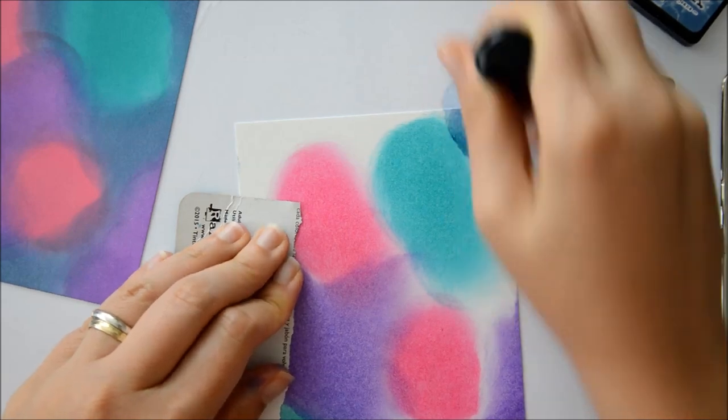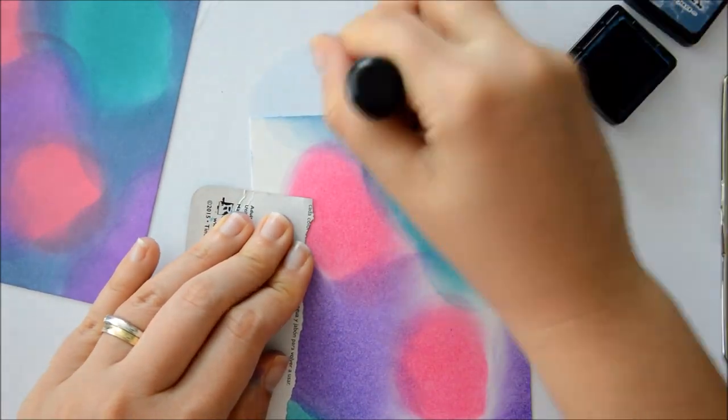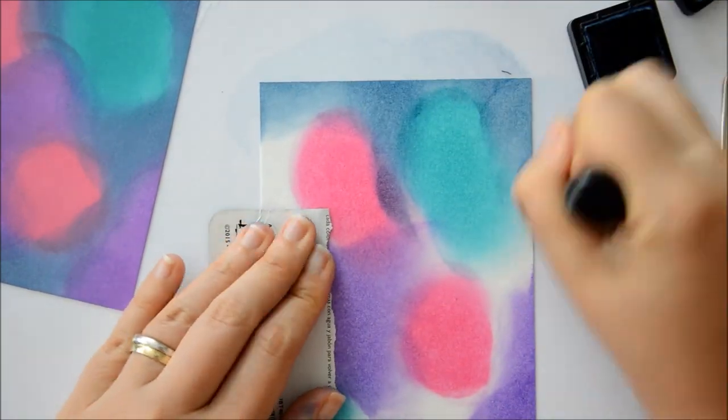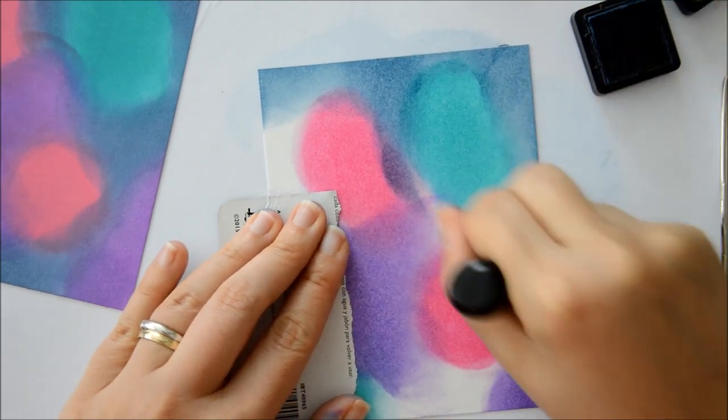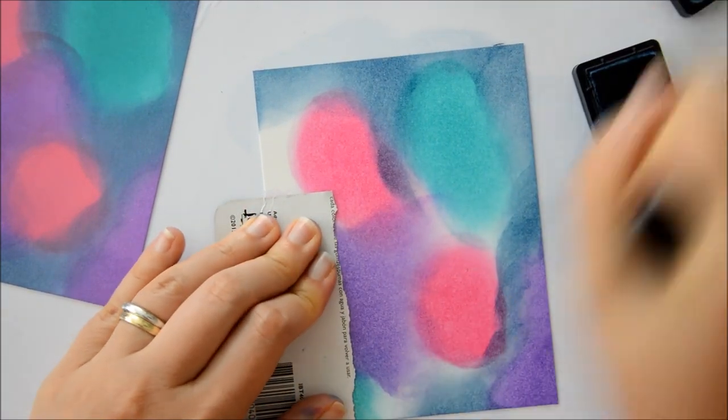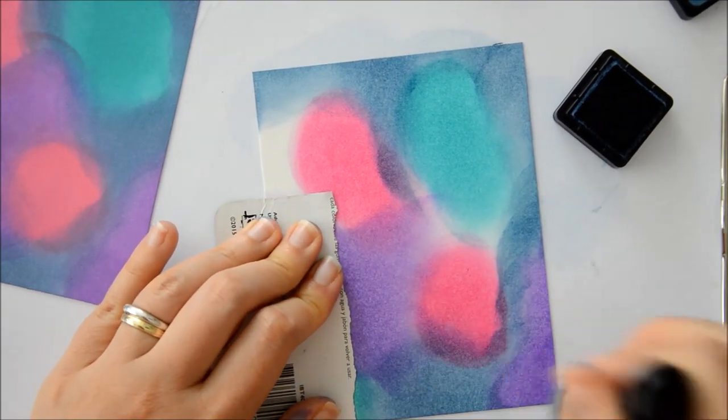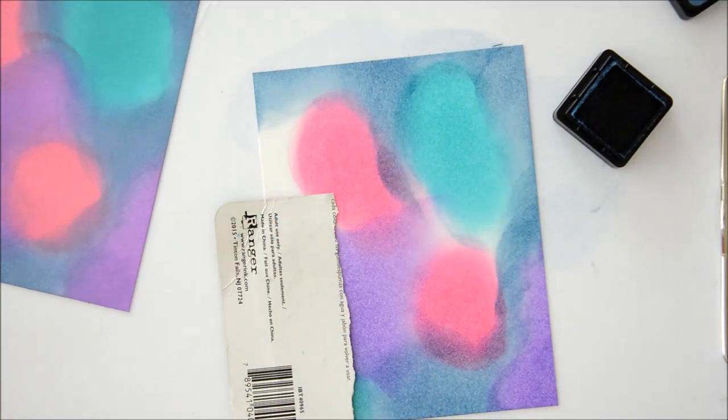And now I am repeating the same process with the distress inks. So I am adding faded jeans on the edges of the cardstock and on the areas in between the different colors in the middle. And if you have troubles with blending distress inks, I would really recommend you try this Bristol Smooth cardstock if you haven't tried it.